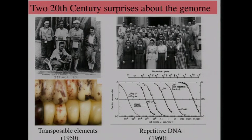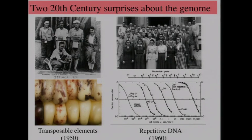The discovery by Barbara McClintock that there are transposable elements in the genome, and not that much later, the discovery by Roy Britton that a major amount of the DNA in animal genomes is highly repetitive. I'm pleased with both of these discoveries — both were made at my institution, the Carnegie Institution: the Department of Genetics at Cold Spring Harbor, and the Department of Terrestrial Magnetism in Washington, which had the first cyclotron and first P32 in the United States.